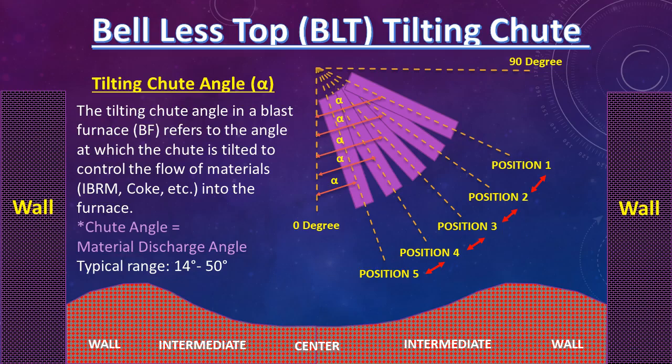Now we will discuss what is alpha angle. The tilting shoot angle in a blast furnace refers to the angle at which the shoot is tilted to control the flow of materials — iron bearing raw materials, coke, etc. — into the furnace. Chute angle alpha equals the material discharge angle. The typical range of alpha angle is 14 degrees to 50 degrees, and may vary depending upon the size and design of the furnace.